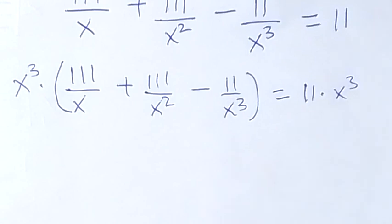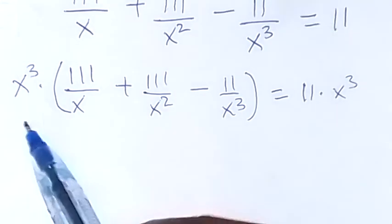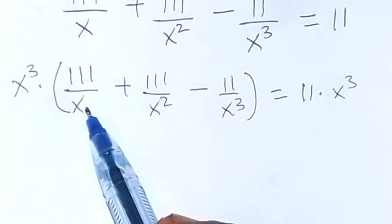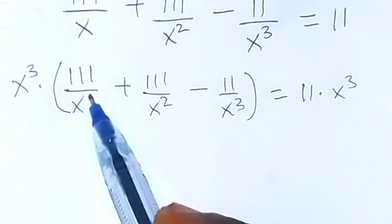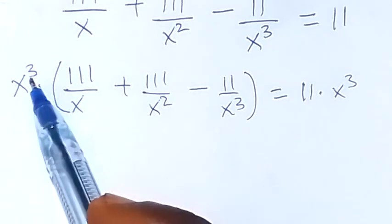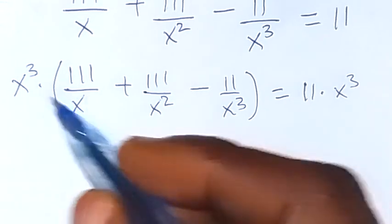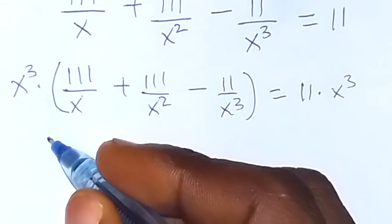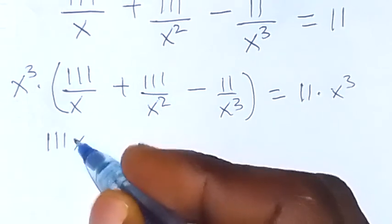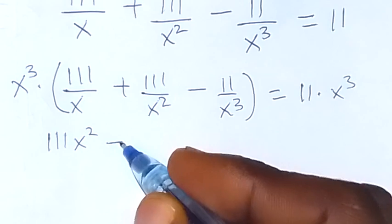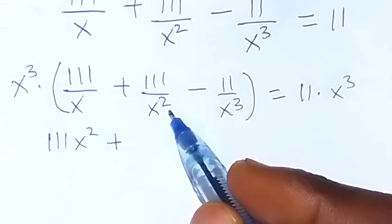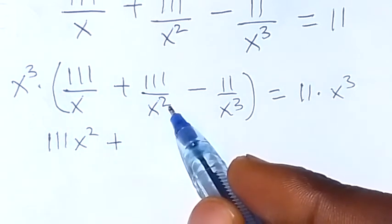So when x raised to power 3 opens this bracket, for the first term we cancel one of the x's, so we have x squared. Then x raised to power 3 times x squared gives us the next term.